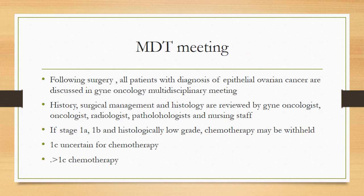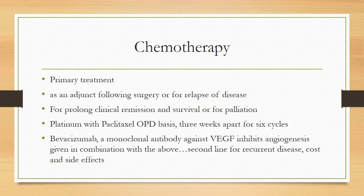Following surgery, all patients with a diagnosis of epithelial ovarian cancer are discussed in a gynaecological oncology multidisciplinary meeting where history, surgical management, and histology are reviewed by gynaecological oncologists, oncologists, radiologists, pathologists, and nursing staff — and a plan is made. If stage 1a or 1b with histologically low-grade tumour, chemotherapy may not be required. If stage 1c or more advanced, chemotherapy is usually recommended.